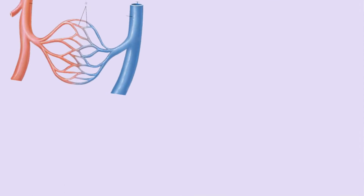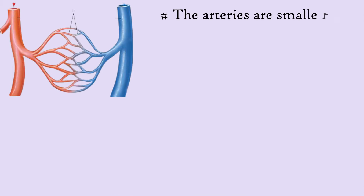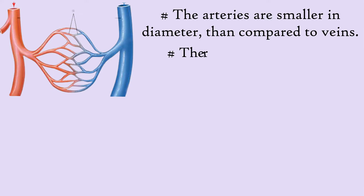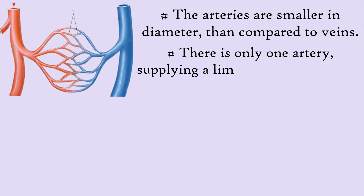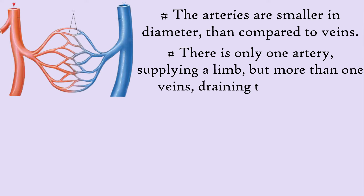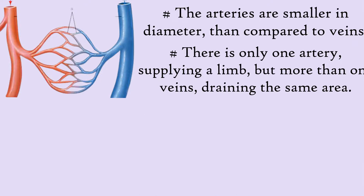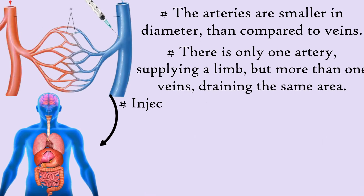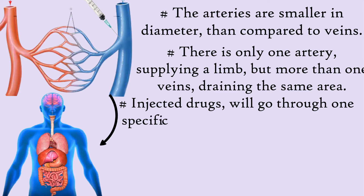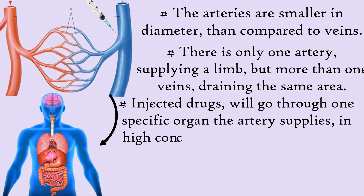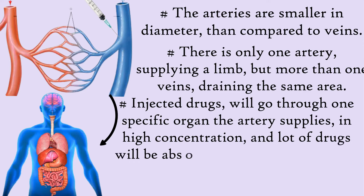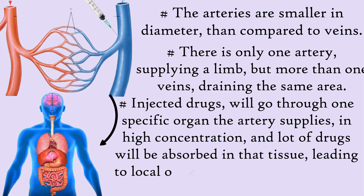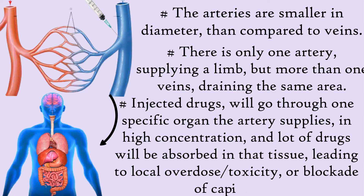Also, the arteries are smaller in diameter compared to veins. There is only one artery supplying a limb, but more than one vein draining the same area. If you inject a drug into an artery, except at the root of the aorta, all the injected drugs will go through one specific organ that the artery supplies in high concentration, and a lot of drugs will be absorbed in that tissue, leading to local overdose, toxicity, or blockade of capillaries.